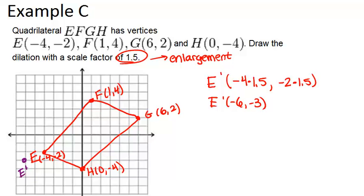So we're going to do the same thing for the other three points. So F prime is going to be 1 times 1.5 for the x-coordinate and 4 times 1.5 for the y-coordinate. So that means that F prime is going to be (1.5, 6). So again, let's plot that. And here we go. F prime.